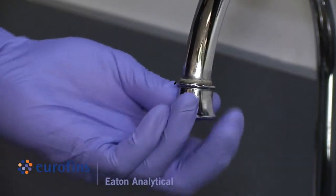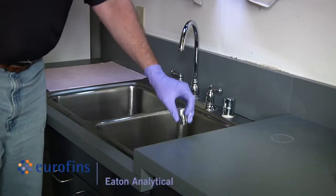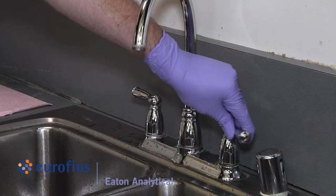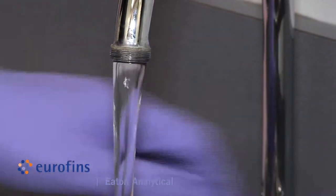Before sampling, remove the aerator and screen if sampling from a faucet or tap. Open the tap and let the water run at fast flow for approximately five minutes.